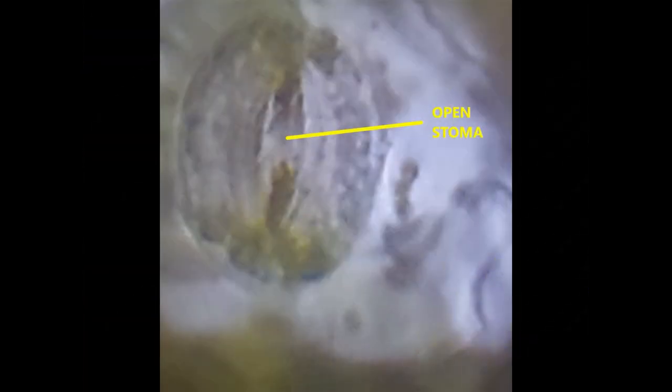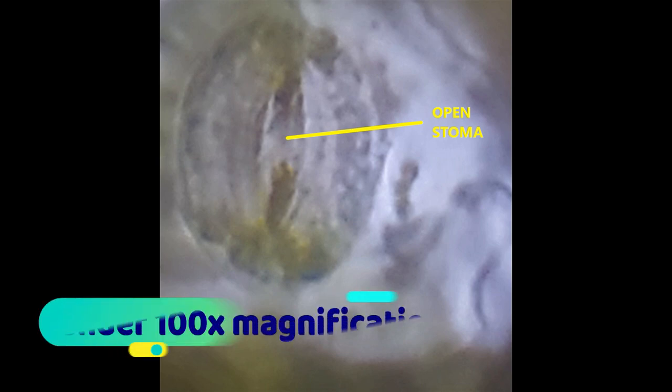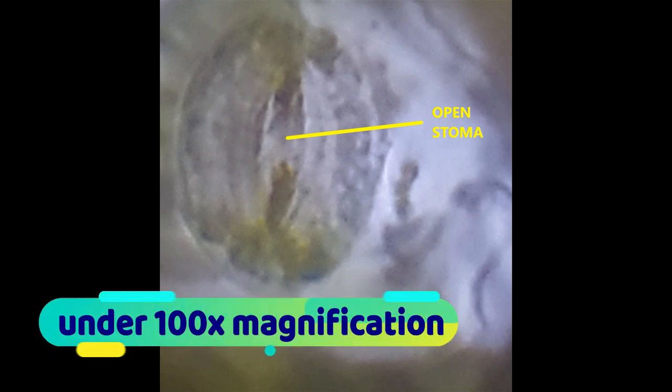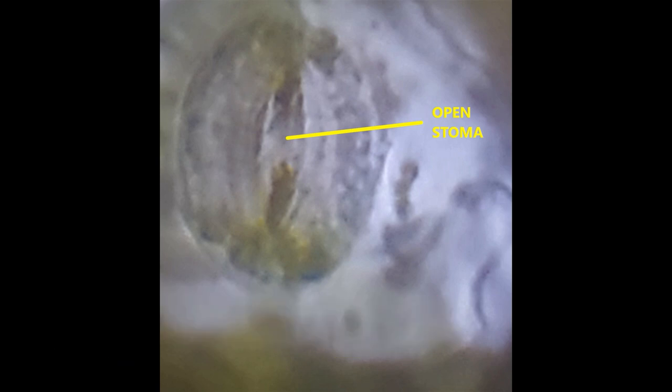During the time of transpiration, when water moves inside the guard cells, as a result guard cells become swollen, so that time the stomata is called the open stomata due to the opening of the pores. Once the water moves out from the guard cells, as a result the guard cells become shrunken and that time the stomatal aperture becomes closed, and this is called closed stomata.